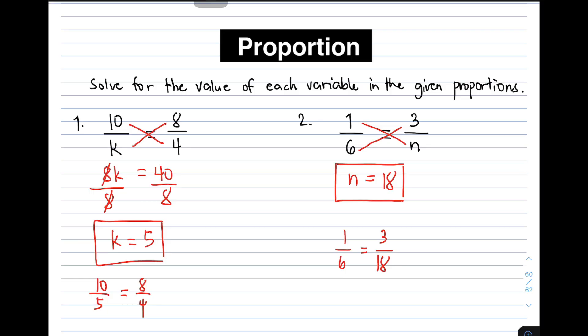Yes. As you can see, the GCF, or the greatest common factor of 3 and 18, is equal to 3. So when you divide it by 3, it will give you 1 over 6 is equal to 1 over 6. This is, they are equal. Okay?